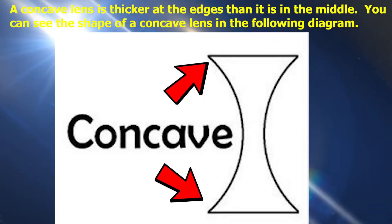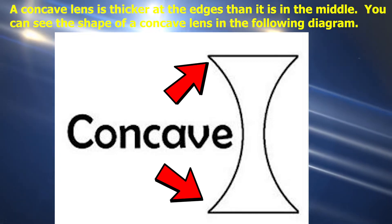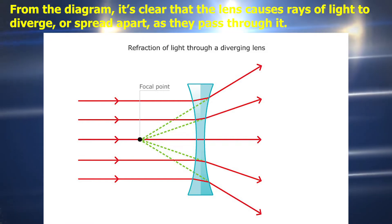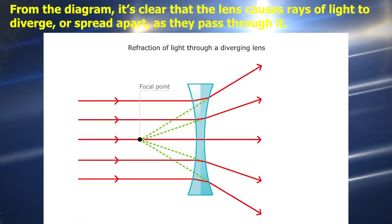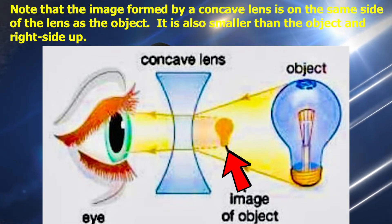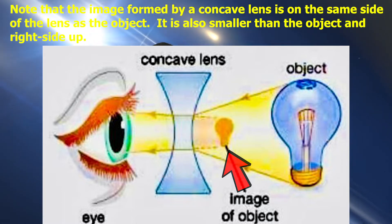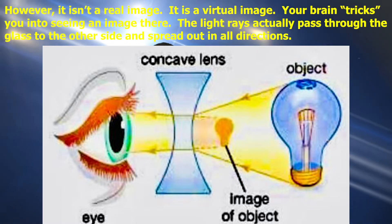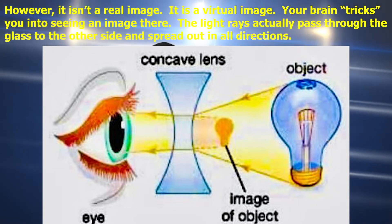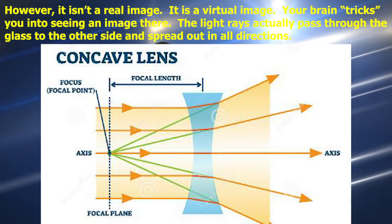A concave lens is thicker at the edges than it is in the middle. You can see the shape of a concave lens in the following diagram. From the diagram, it's clear that the lens causes rays of light to diverge or spread apart as they pass through it. Note that the image formed by a concave lens is on the same side of the lens as the object. It is also smaller than the object and right side up. However, it isn't a real image — it is a virtual image. Your brain tricks you into seeing an image there. The light rays actually pass through the glass to the other side and spread out in all directions.